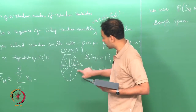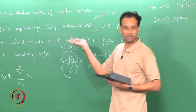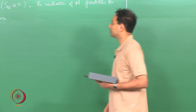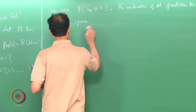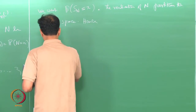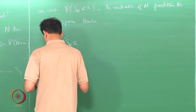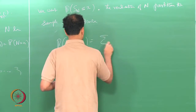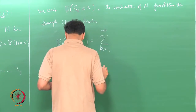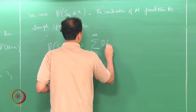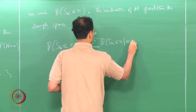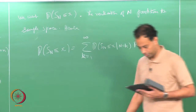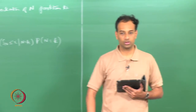Once I have a partition of the sample space, I can invoke the law of total probability. We write: probability that S_N is less than or equal to x equals the sum over k from 1 to infinity of P(S_N ≤ x | N = k) times P(N = k). This follows directly from the law of total probability.